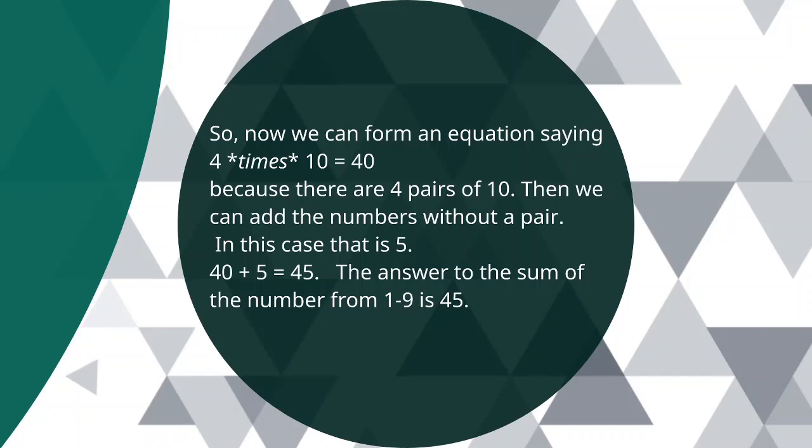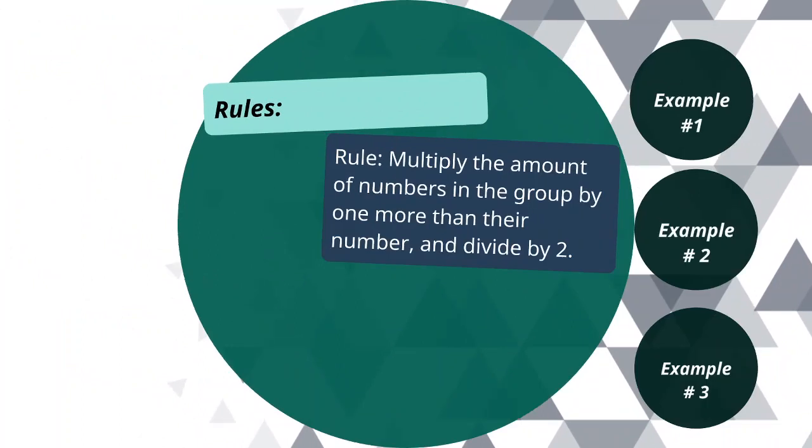We could do all of this work in another simpler way within a rule. So let's learn them. The rule is multiply the amount of numbers in the group by 1 more than their number and divide by 2.